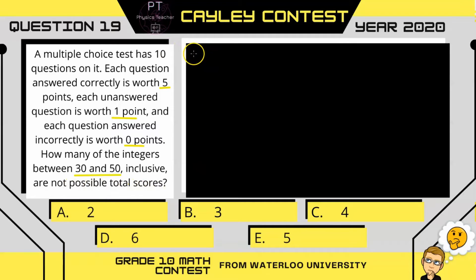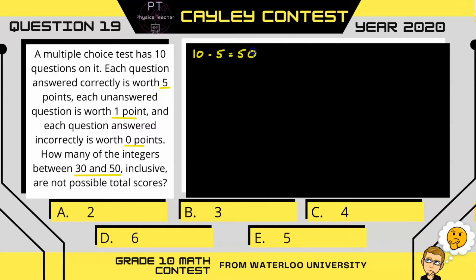Let's assume we start with a perfect score, so we get 10 correct. If we get 10 correct, they're each worth 5 points, so that's a total score of 50.